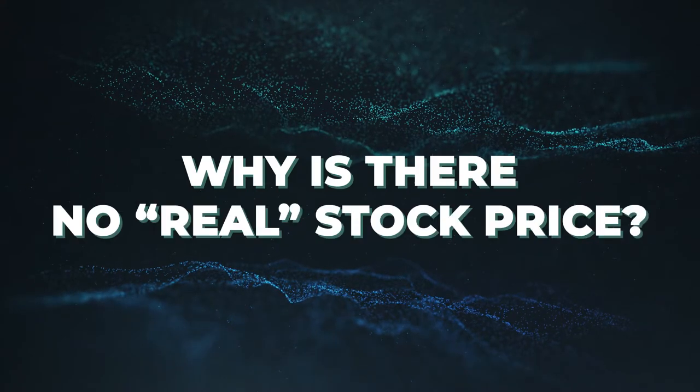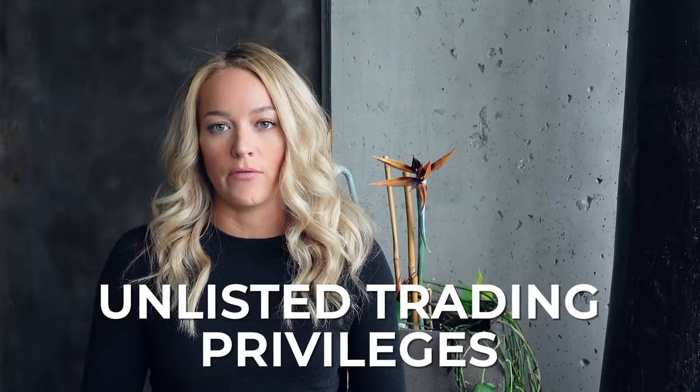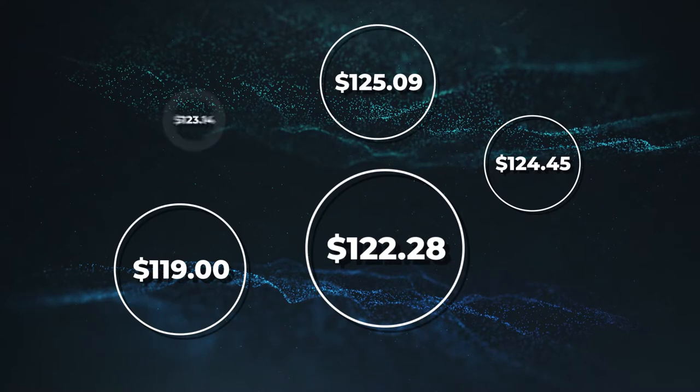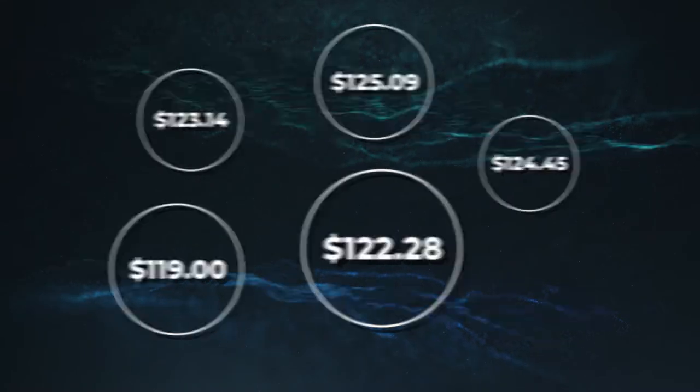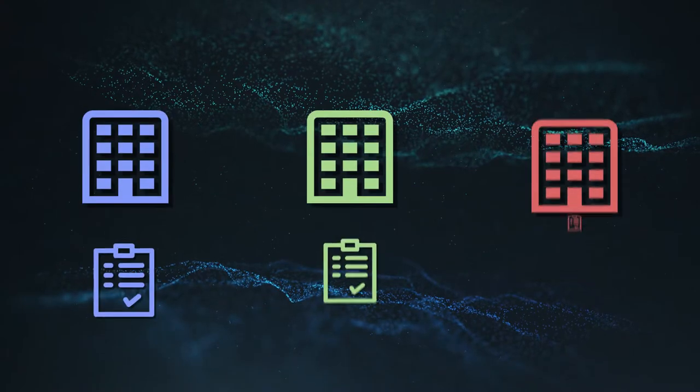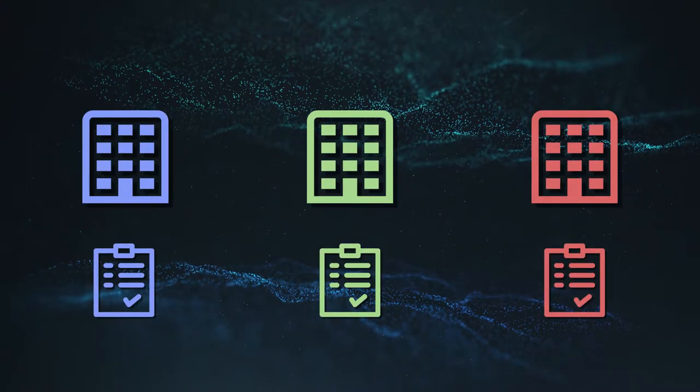Next, we're going to talk about why there is no real stock price. Because of a feature of SEC regulations referred to as unlisted trading privileges, or UTP, stock in a company can trade simultaneously on many exchanges, even though that stock only has a single listing exchange. This means that the price of that stock — the last sale — is updating in many places at once. Exchanges that have more trade activity or higher volume have what is arguably considered to be higher quality stock price data, because the trades are more indicative of the overall market appetite. However, every single exchange sells their own pricing feed and no one pricing feed will look the same. Billions of shares of stock are traded every day, so how can we trust any stock price feed above another?